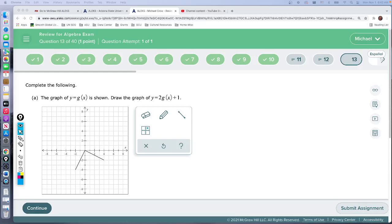Okay, for number 13 we have two transformations going on. Anytime we have a transformation, a change on the outside affects the y. In this case, both transformations are on the outside, so we're going to multiply by two and then add one.